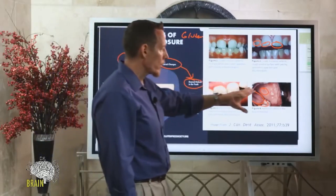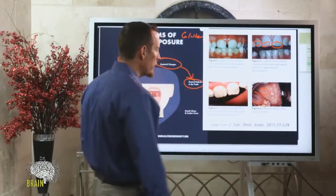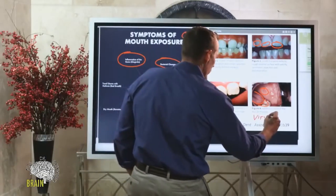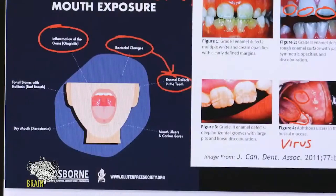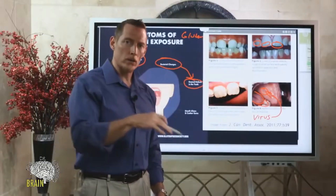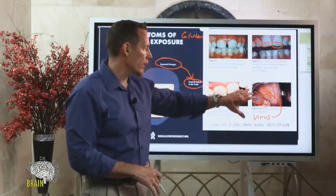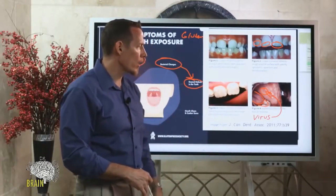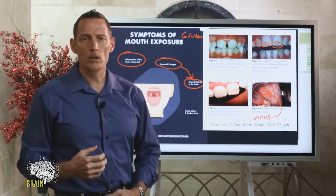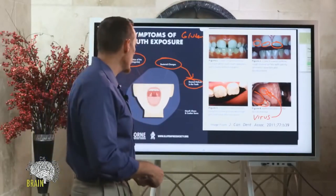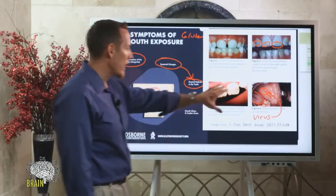A lot of doctors will blame canker sores or aphthous ulcers on the herpes family of viruses, but I have seen countless cases of this type of problem go away in people going on a gluten-free diet. If you struggle chronically with mouth sores or aphthous ulcers, going on a gluten-free diet might just be the thing you need to clear that up.